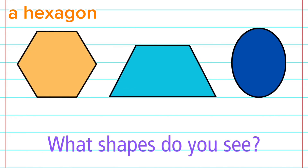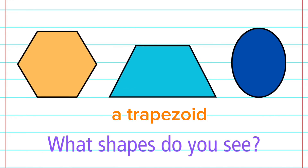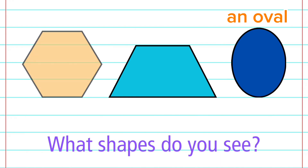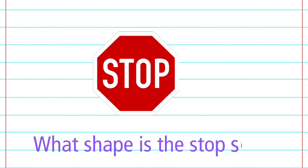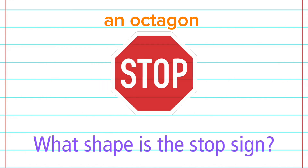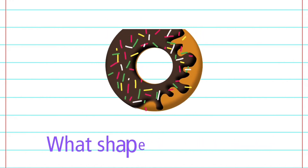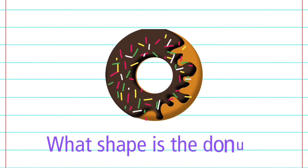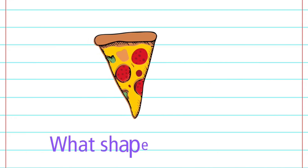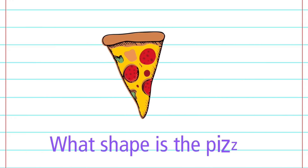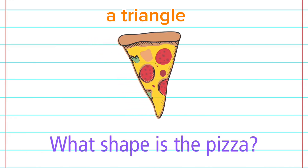A hexagon, a trapezoid, and an oval. What shape is a stop sign? An octagon. What shape is a donut? A circle. What shape is a pizza slice? A triangle.